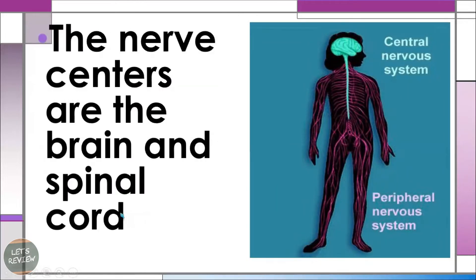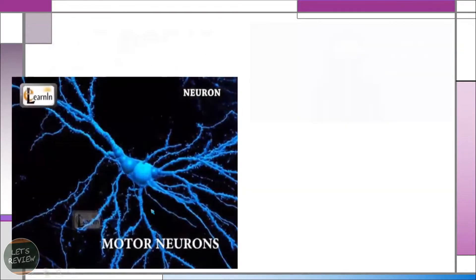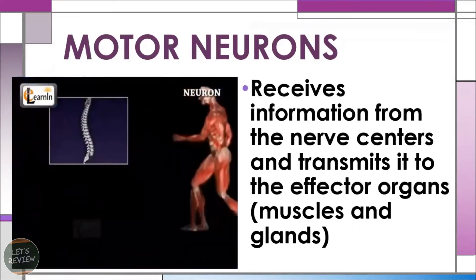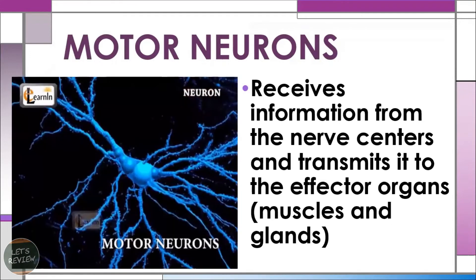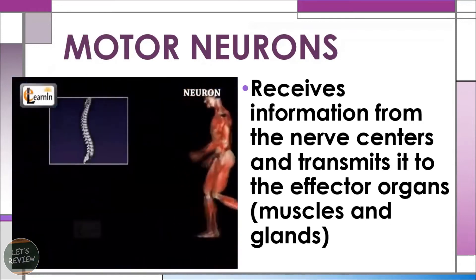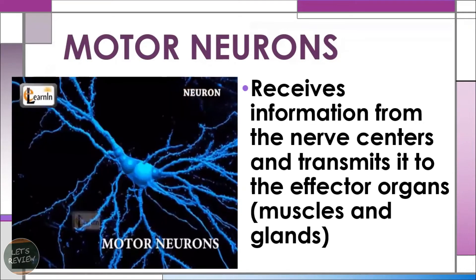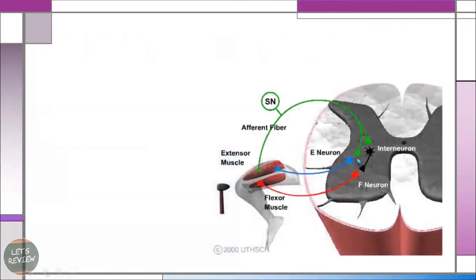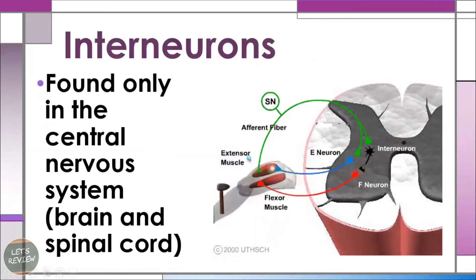The nerve centers — the brain and the spinal cord — are considered the central nervous system. Aside from sensory neurons, we also have motor neurons. Motor neurons receive information from the nerve centers and transmit it to the effector organs such as our muscles and glands. From the name itself, motor relates to movement. These neurons are found only in the central nervous system — the brain and the spinal cord.